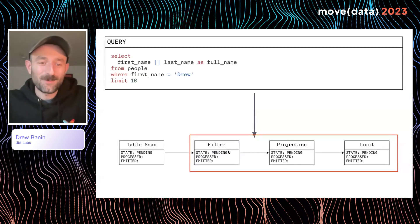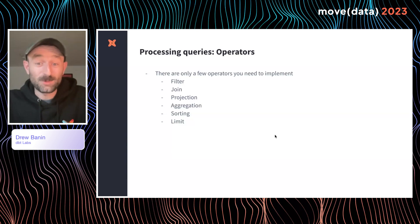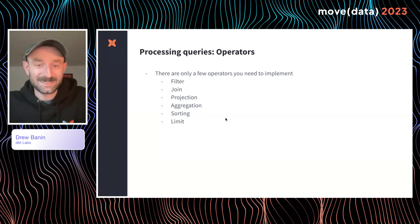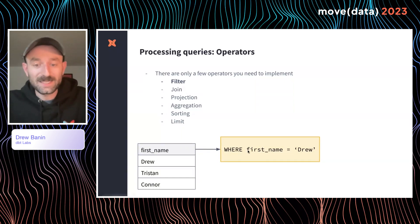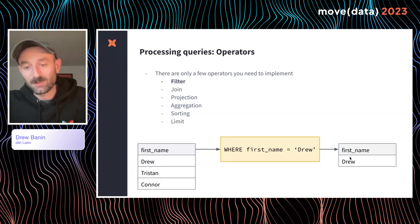Let's get back to operators. We talked about the table scan operator and techniques to speed up queries. Now let's talk about how operators like filters, projections, and limits work. There are really only a few operators you'd need to implement in a database: filter, join, aggregate, sort, and limit — because these are the keywords you see in SQL syntax. A database takes that SQL select statement, translates it to these operators, and executes them. Looking at a filter operator: we get input data — maybe from a table scan or a join — and feed it into the filter operator, which says where first_name equals Drew. The operator emits any rows that match that predicate. Here we put three rows in and get one row out.